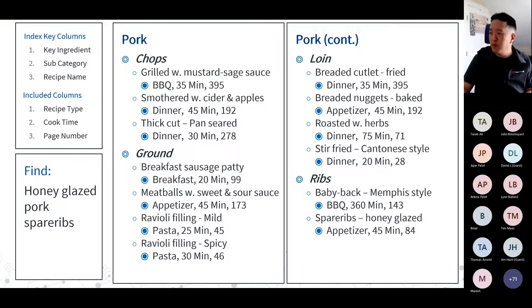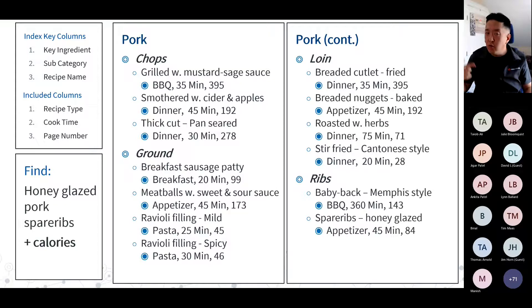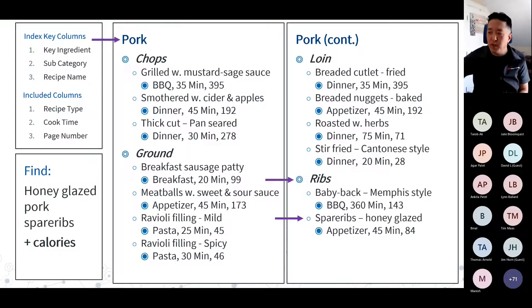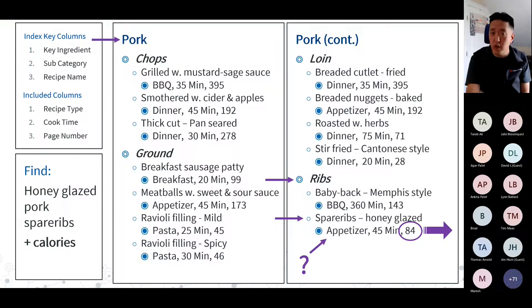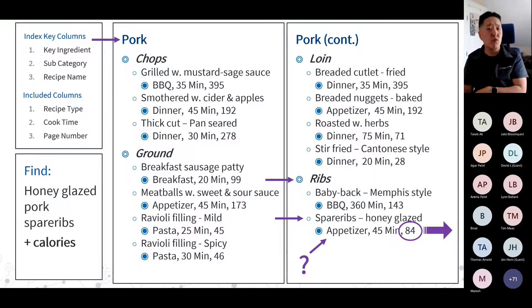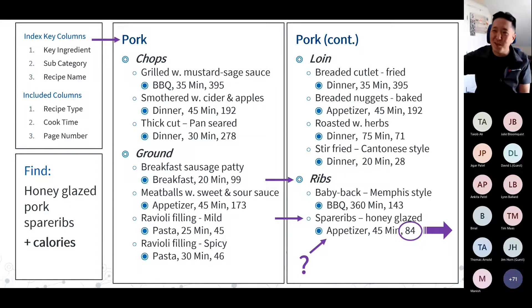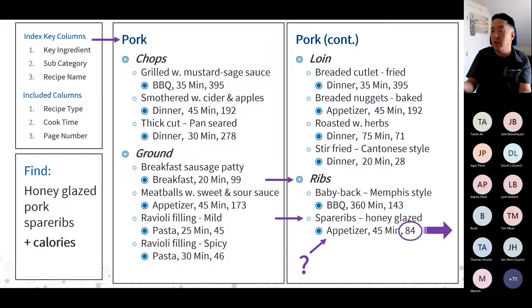Honey glazed pork spare ribs: I can navigate straight to the recipe, but if I also need the calorie count and calories is not an included column, I must use the page number to look up the recipe itself. This is analogous to a key lookup operation in SQL Server. I don't want to include the entire recipe in my index — that's just another copy of my data. It's always a trade-off: if calorie count is queried frequently, include it; if only periodically, accept the extra lookup work.